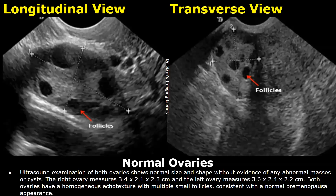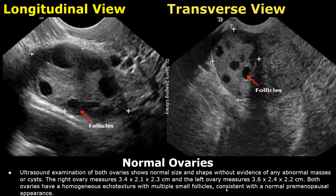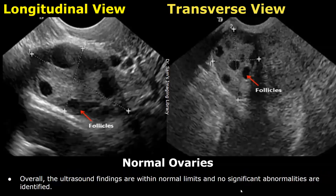This is a report for normal ovaries. You can start by writing: Ultrasound examination of both ovaries shows normal size and shape without evidence of any abnormal masses or cysts. Then you can write the sizes of the ovaries, their echo texture, and mention the follicles seen. After that you can write: overall the ultrasound findings are within normal limits and no significant abnormalities are identified.